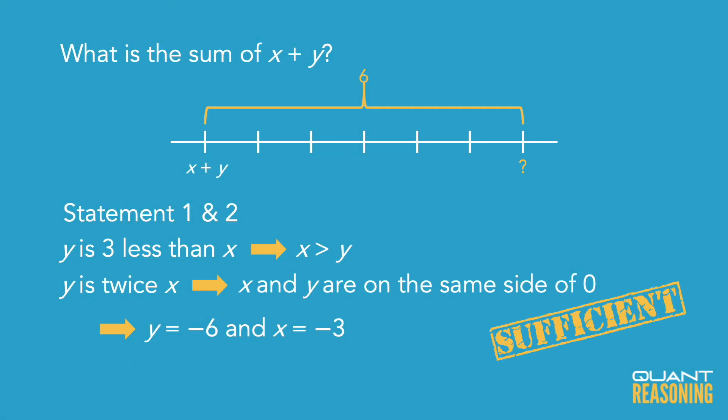But it's interesting to point out that if statement 1 did not imply the relative order of x and y, if it just told us that the difference between them is 3, then we wouldn't know whether we're on the right side of zero or on the left side of zero, and then we'd actually get two different possible answers to the question.